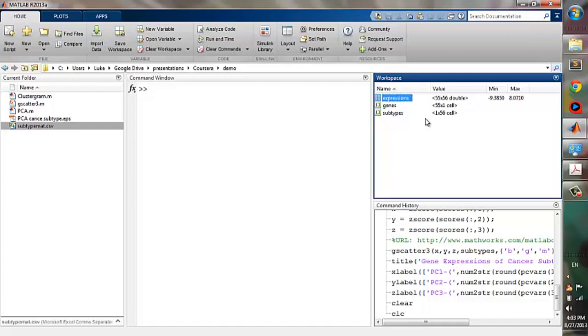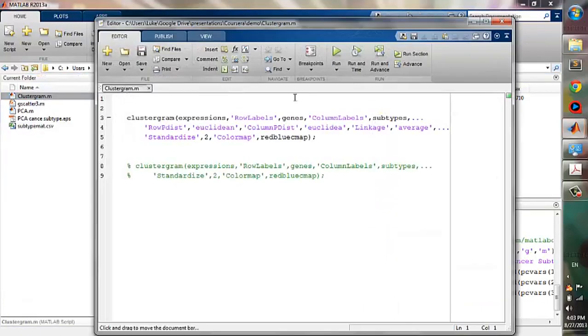The name of this function is clustergram. I will open the script I already wrote, and the name is clustergram. The first input argument is the expressions matrix, then we will specify all the properties. The first one is row labels, we will give it the variable genes.